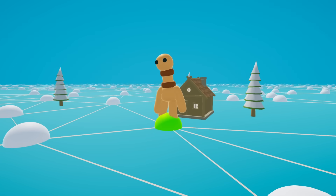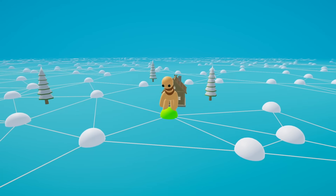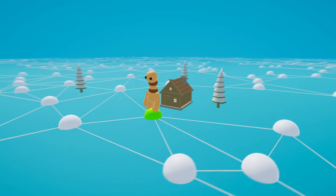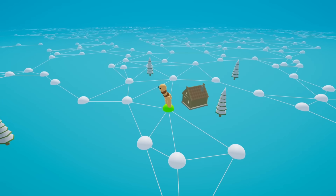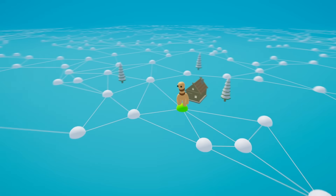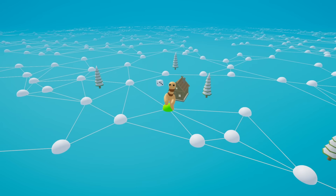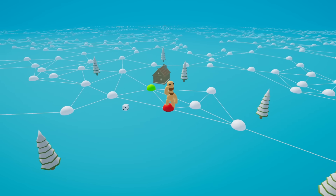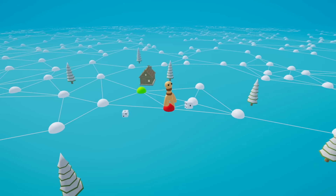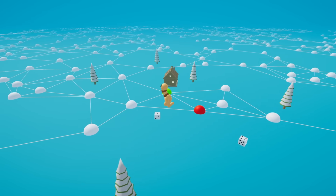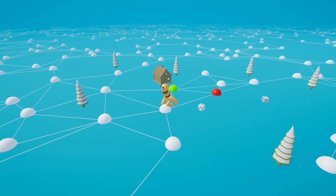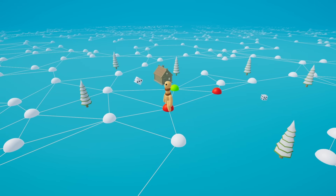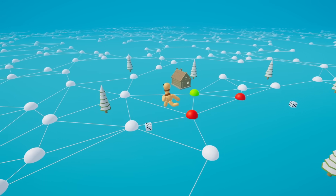Meet our pawn. He just stepped out of his house into a graph-like city. At every intersection he hesitates and lets the dice decide his path. He keeps going node after node until home is far behind. But here's the question: will he ever return? Is it inevitable, or could he wander this infinite city forever?